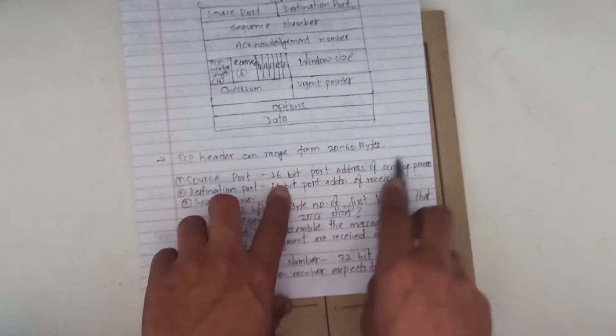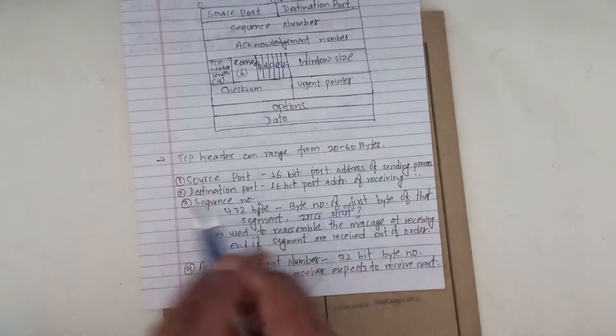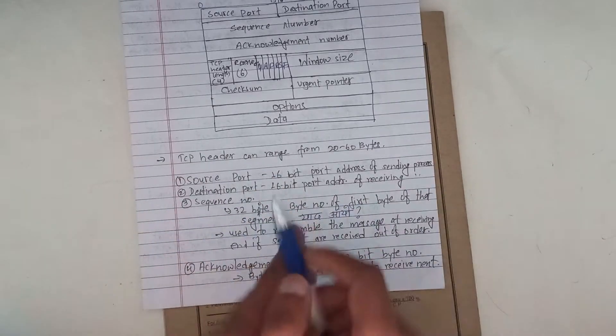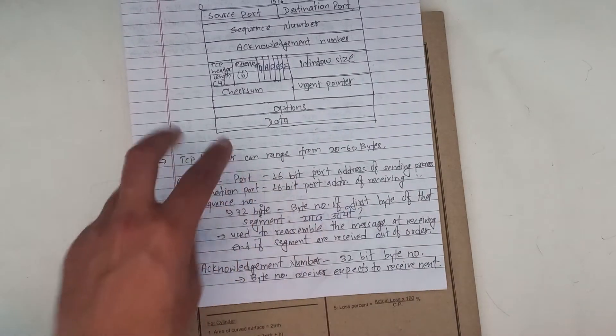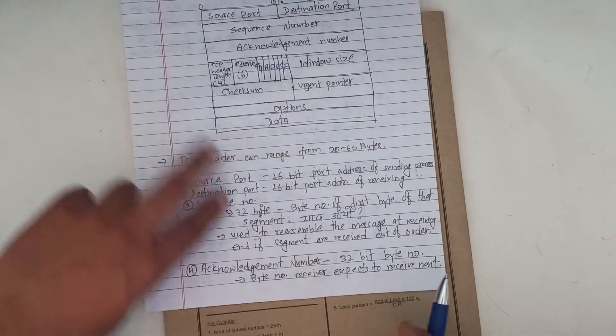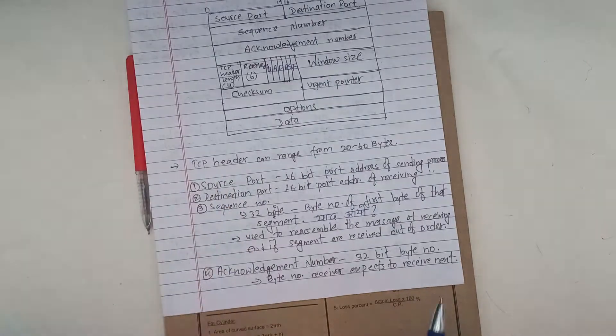The source port is a 16-bit port address of the sending host. It is the 16-bit port address of the source port.